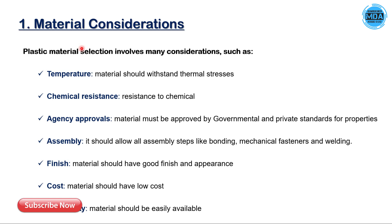Material selection involves many factors. Sometimes we need to check temperature resistance, chemical resistance, agency approval, assembly, finishing, cost, and availability. In terms of temperature, the material should withstand thermal stresses. For chemical resistance, when the part comes in contact with any solid, liquid, or gas, it must be resistant to those chemicals. For agency approval, the material must be approved by governmental and private standards for properties such as heat resistance, electrical, and mechanical properties.